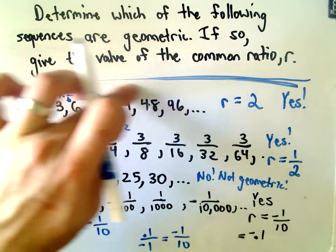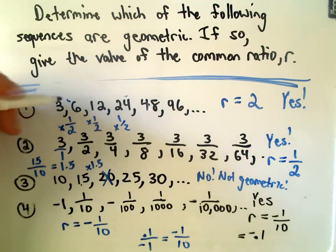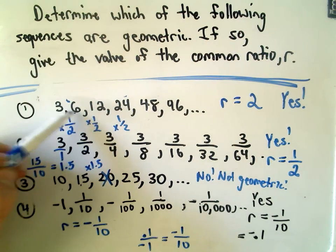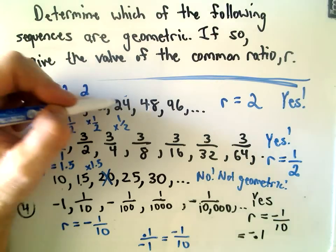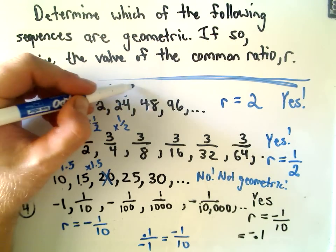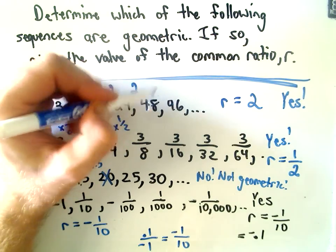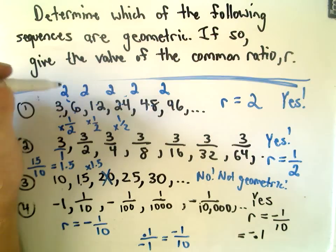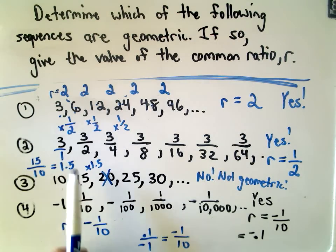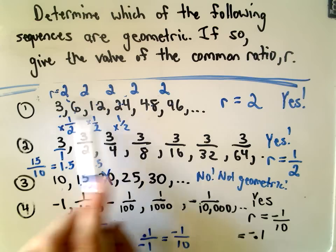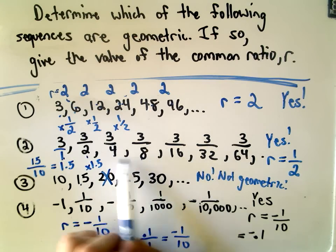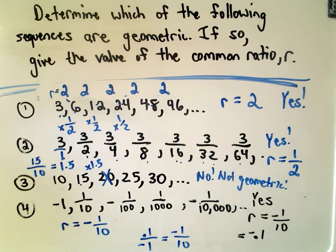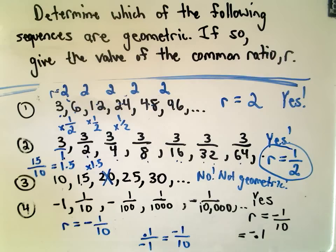Going back to the first example, just to emphasize how you can pick out your R value. Notice if you take 6 divided by 3, we get the number 2. If we take 12 divided by 6, we get the number 2. 24 divided by 12, we get 2. 48 divided by 24, we get 2. 96 divided by 48, we get the number 2. And this is what we said our R value was. So if you have a calculator handy and you feel a little shaky with your arithmetic, just take one number and divide it by the previous number. And you're going to have to do this for all consecutive pairs of numbers. But if you get that same R value, it says yeah, it is going to be considered a geometric sequence.